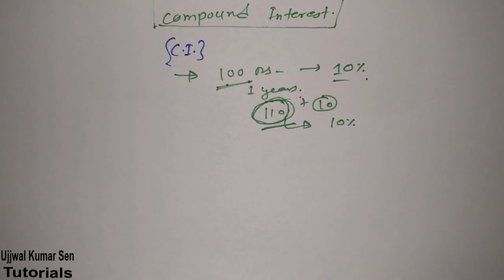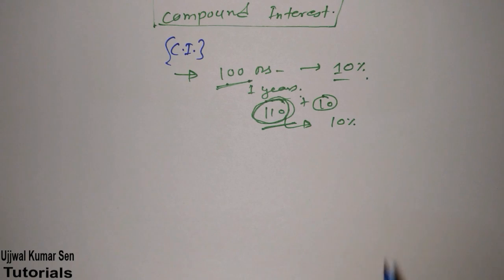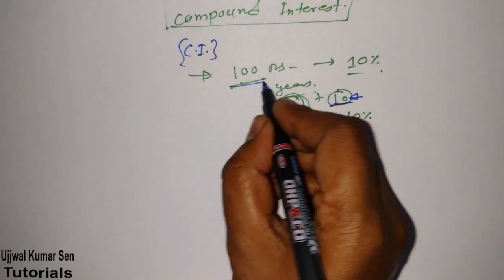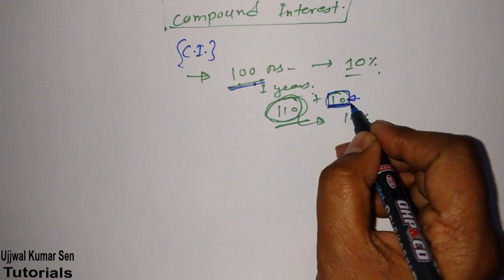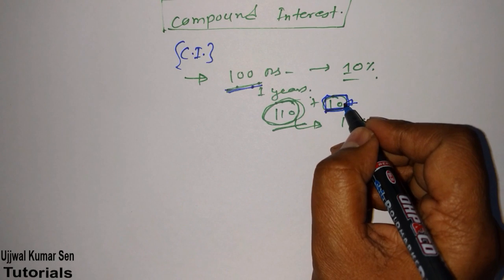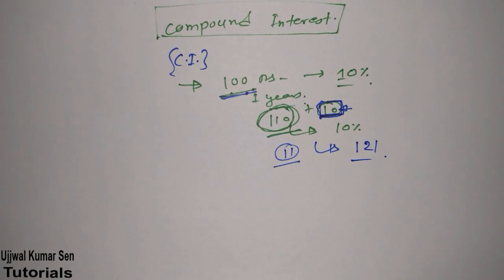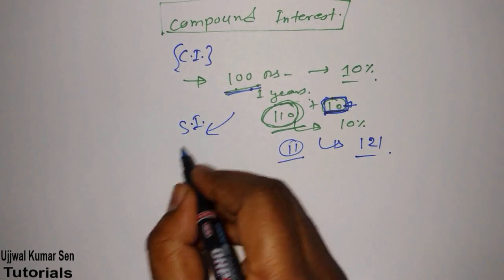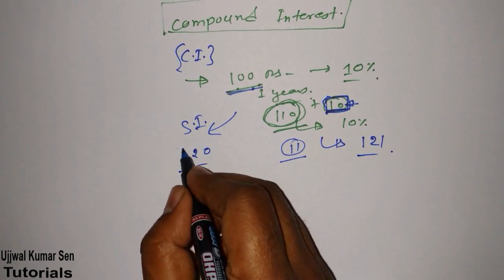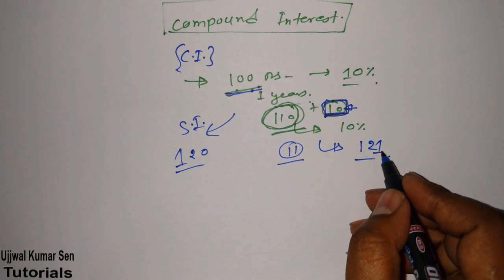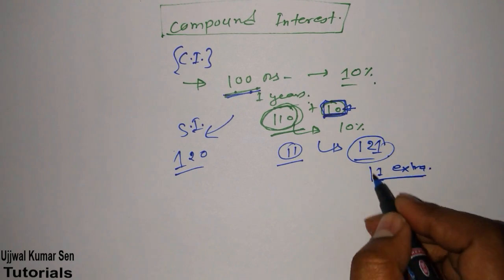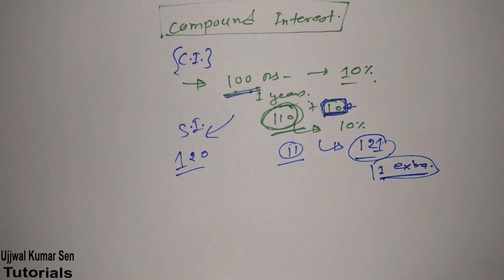Compound interest is much better than simple interest if you are depositing money, because you will get interest on your interest. That means you will also get interest on the 10 rupees earned. So at 10%, 10% of 110 is 11 rupees, giving a total of 121 rupees after two years. With simple interest, after two years your total would be only 120 rupees. The difference grows much larger over 10 or 12 years.